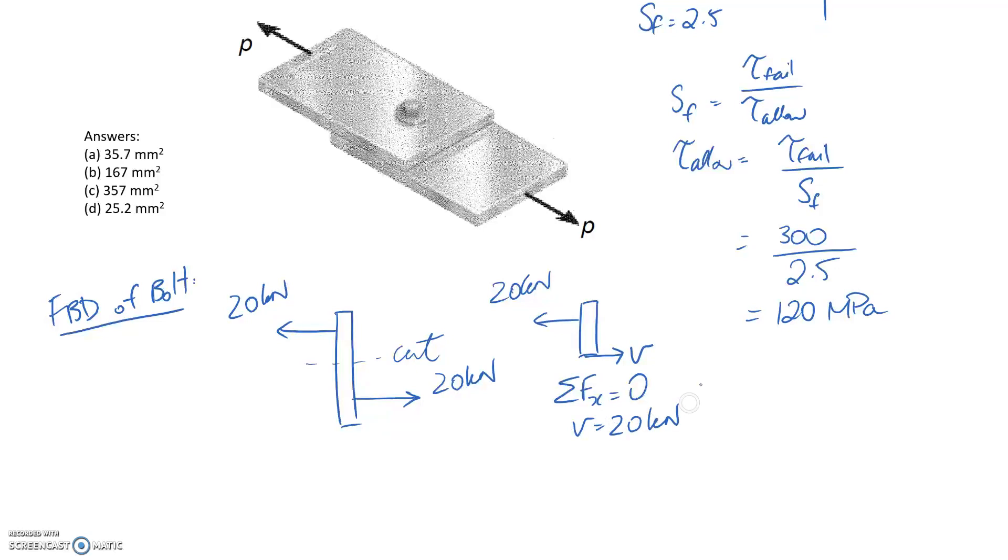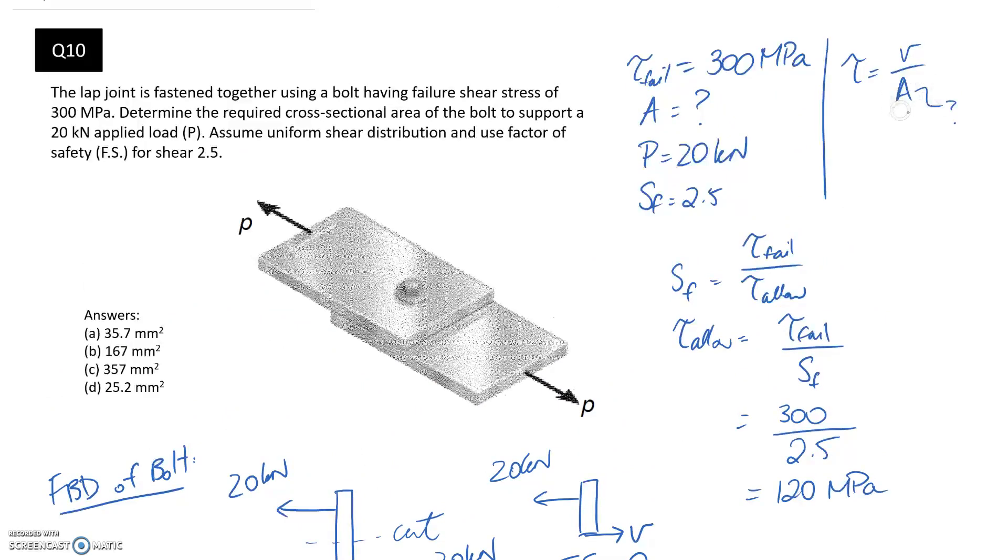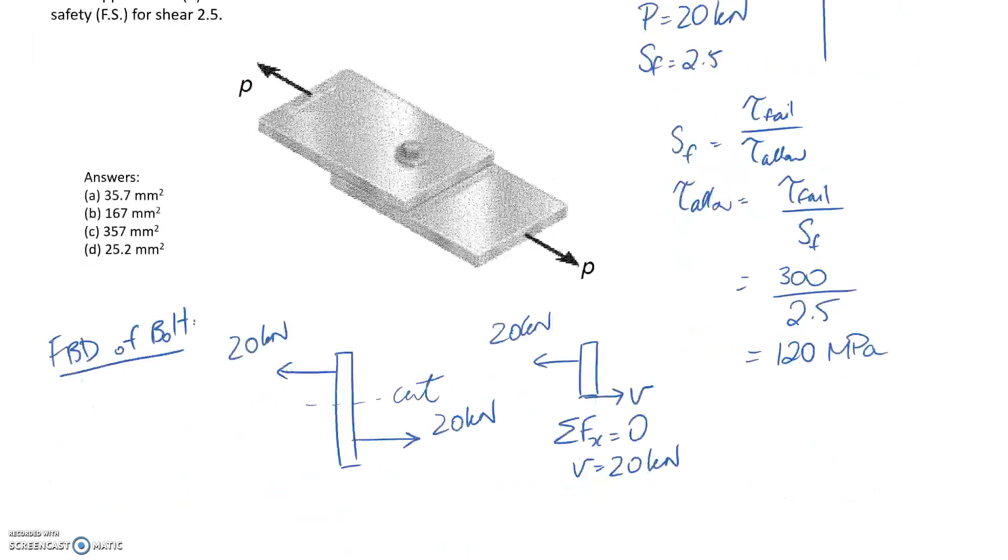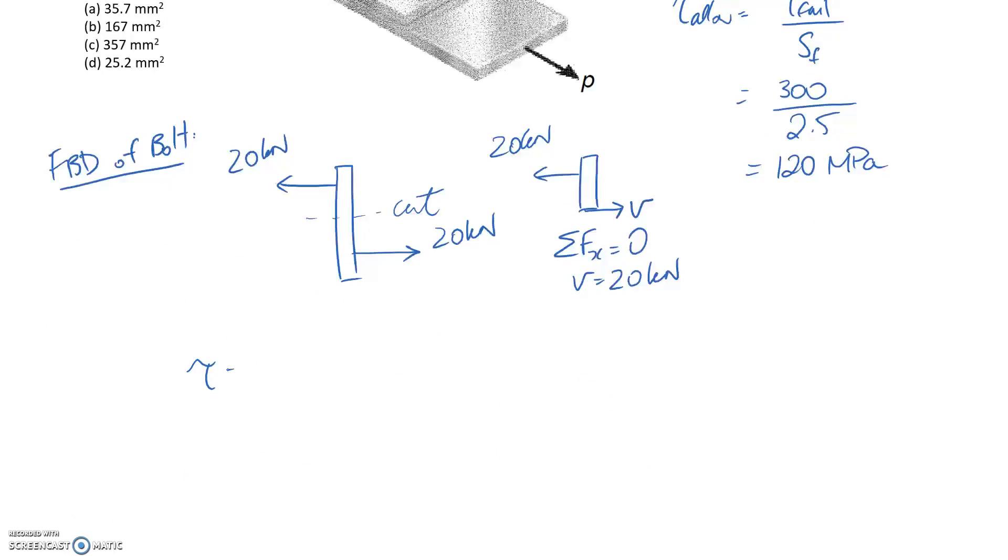So now we've got the internal shear, and we have the allowable shear stress, we should be able to figure out the cross-sectional area. So rearranging for A, and then substituting in. So this is in kilonewtons at the moment. I'm going to put this into newtons, which means I need to times it by 1000.